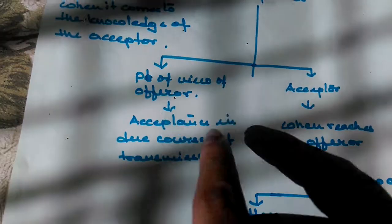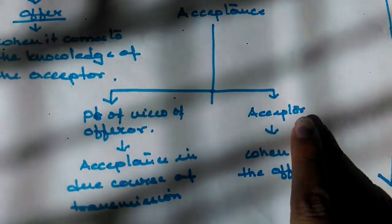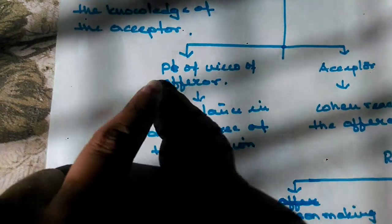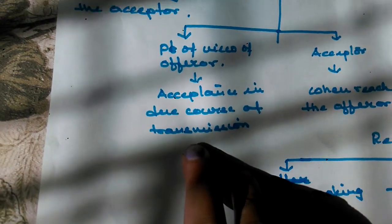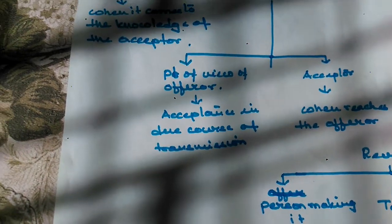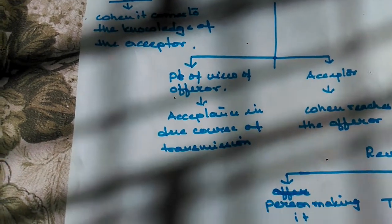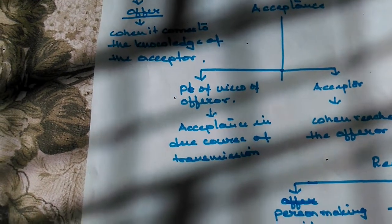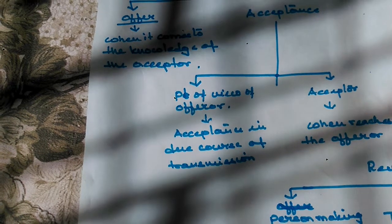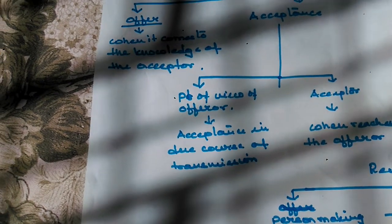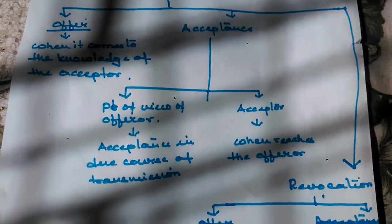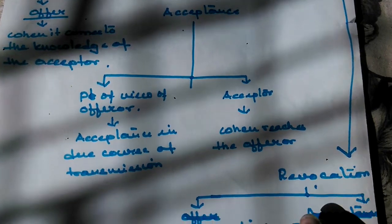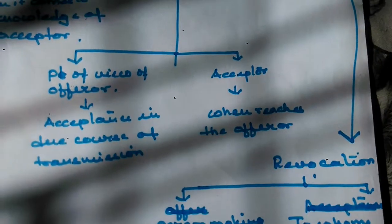When is communication of acceptance complete? It can be divided into two parts: from the point of view of the offeror and from the point of view of the acceptor. From the point of view of the offeror, communication of acceptance is complete when the acceptance is put in due course of transmission — for example, when a letter is put in course of transmission, it is complete against the offeror.